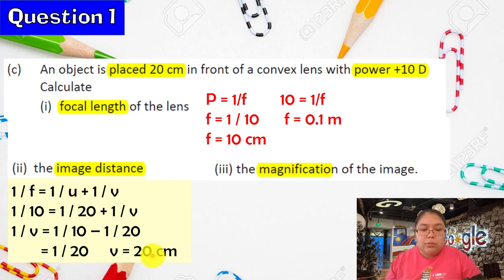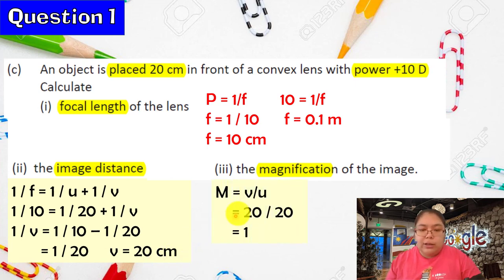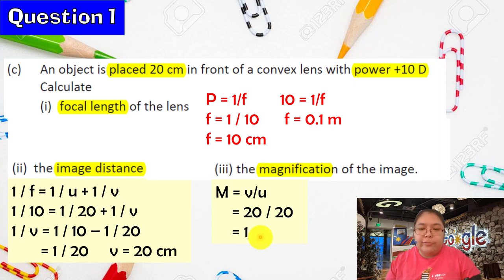Now number three, magnification. The magnification formula is M = V/U. V = 20, U = 20, so M = 1. Magnification of 1 means the image is the same size as the object.